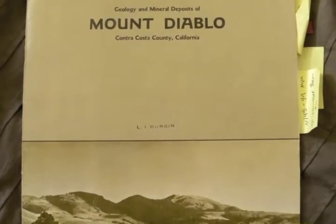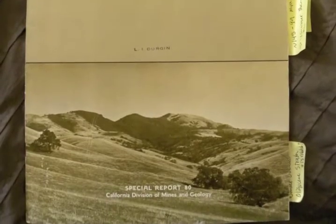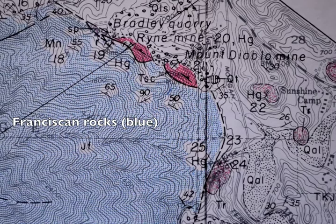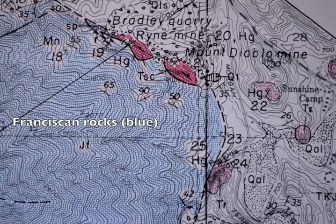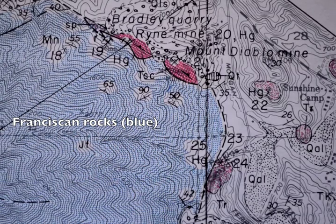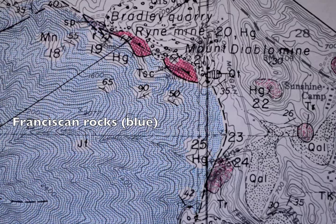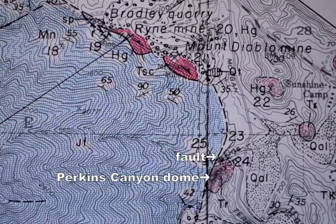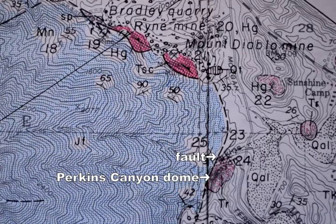This map was made by Earl Pampan, a member of the U.S. Geological Survey back in 1963. It shows the relationship between the older rocks – the Franciscan rocks that make up the bulk of Mount Diablo – and the dome immediately next to those Franciscan rocks. There actually is a fault that separates the Franciscan rocks and the dome. That's the big picture.